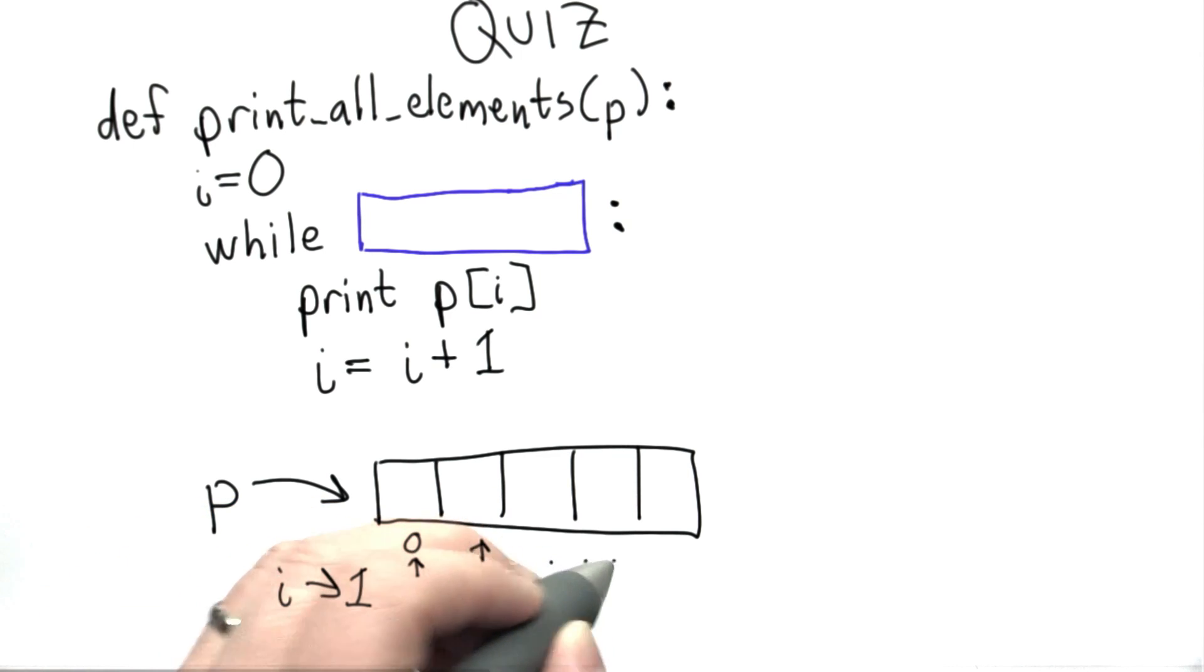We're going to keep going until we get through the elements. What we need for the test condition of the while is to figure out when to stop.